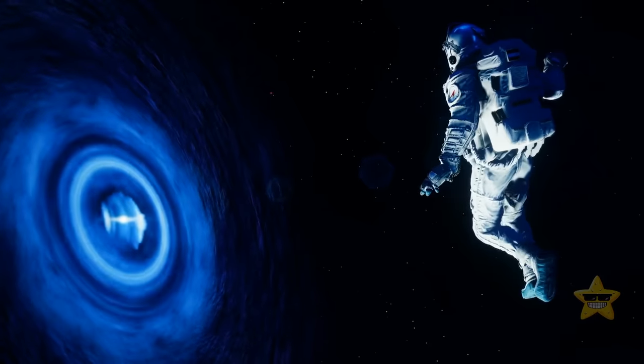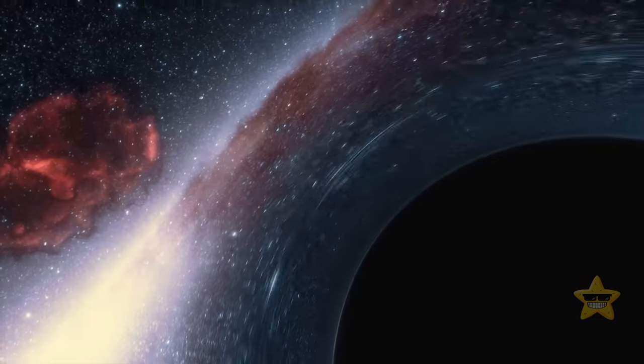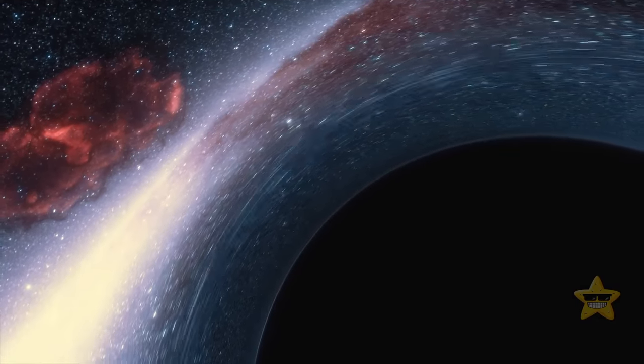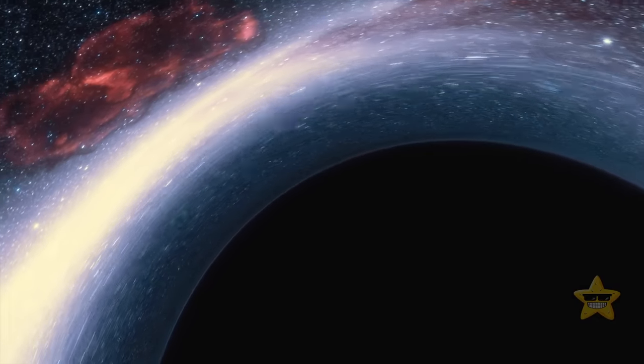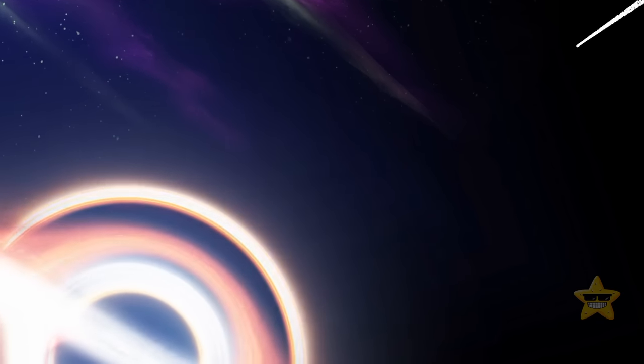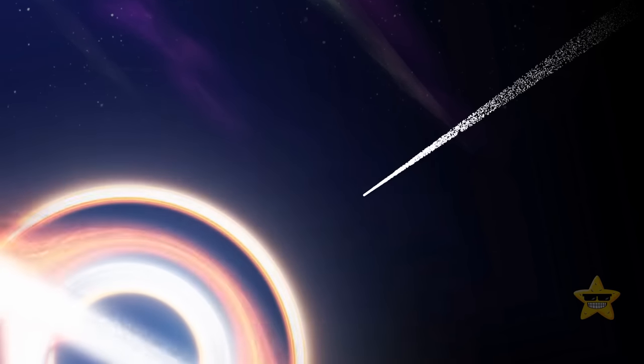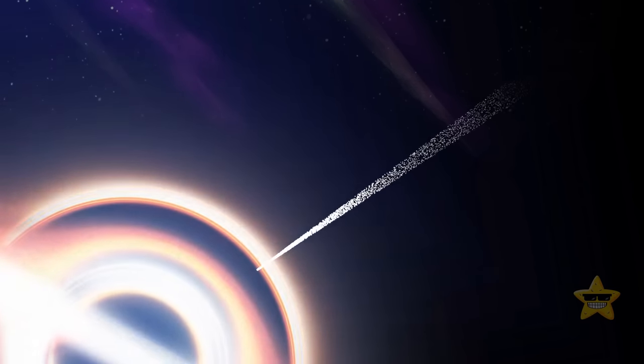An object entering a black hole is instantly transformed. From the outside, it would seem as if the object starts moving more slowly because time distorts near the event horizon of a black hole. When it happens, its mass will be added to that of the black hole.